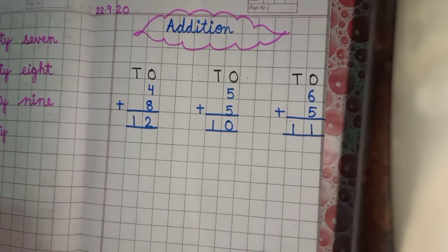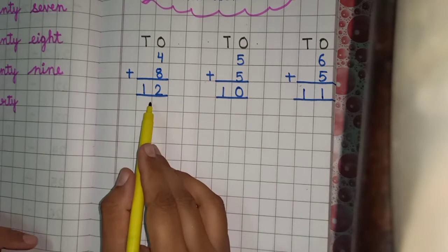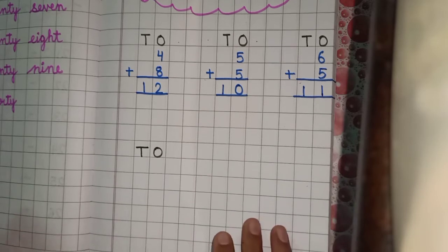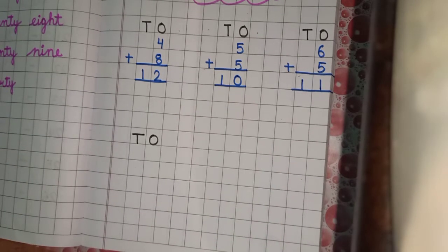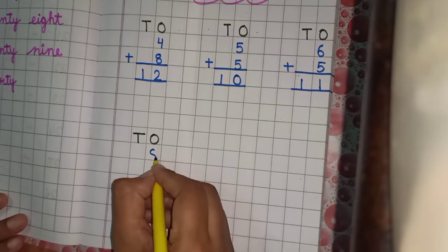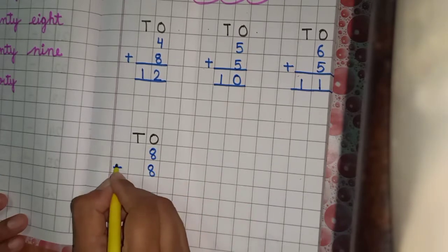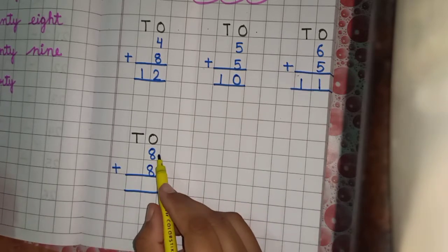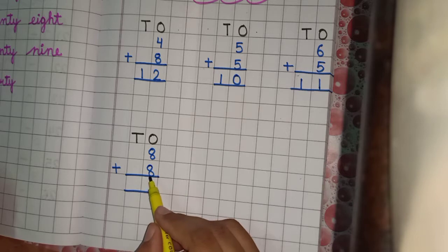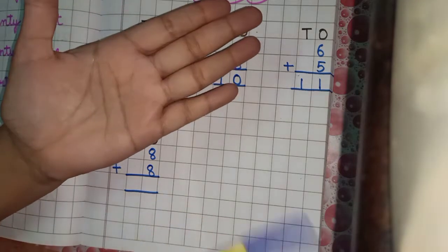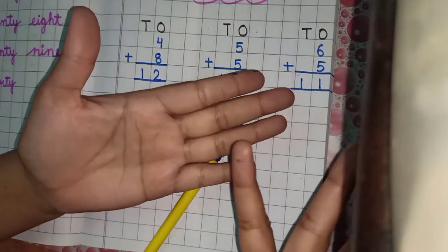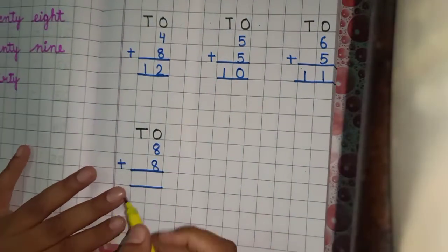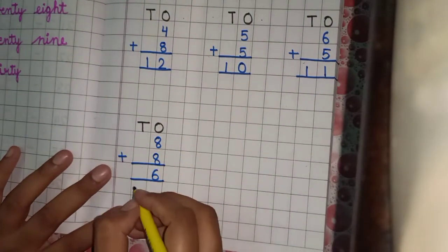Now leave three lines and write again tens and ones. Write eight and eight, sign of addition. Eight plus eight: keep eight in mind and raise eight fingers — one, two, three, four, five, six, seven, eight. Then count: nine, ten, eleven, twelve, thirteen, fourteen, fifteen, sixteen. Write six under the place of ones and one under the place of tens.